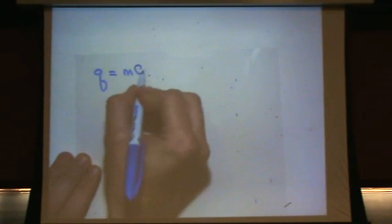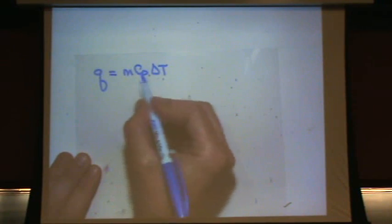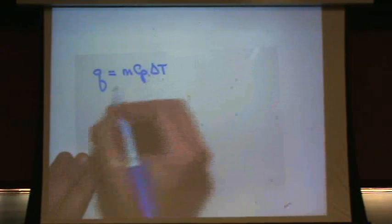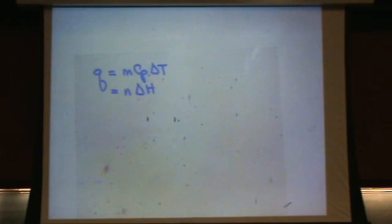Q has actually two formulas. It can be MCP delta T, and your instructor might use CSP. Here's another form of it: N delta H. Those are two formulas for Q. The top one is if there's a temperature change. Bottom one if there's an enthalpy change.